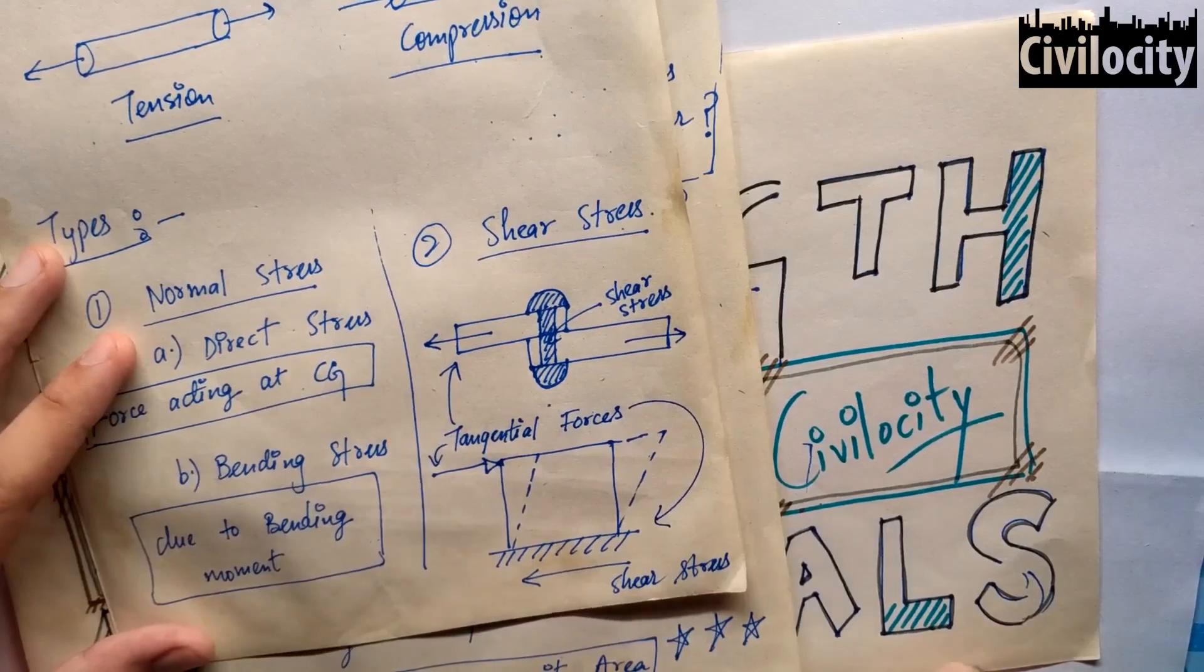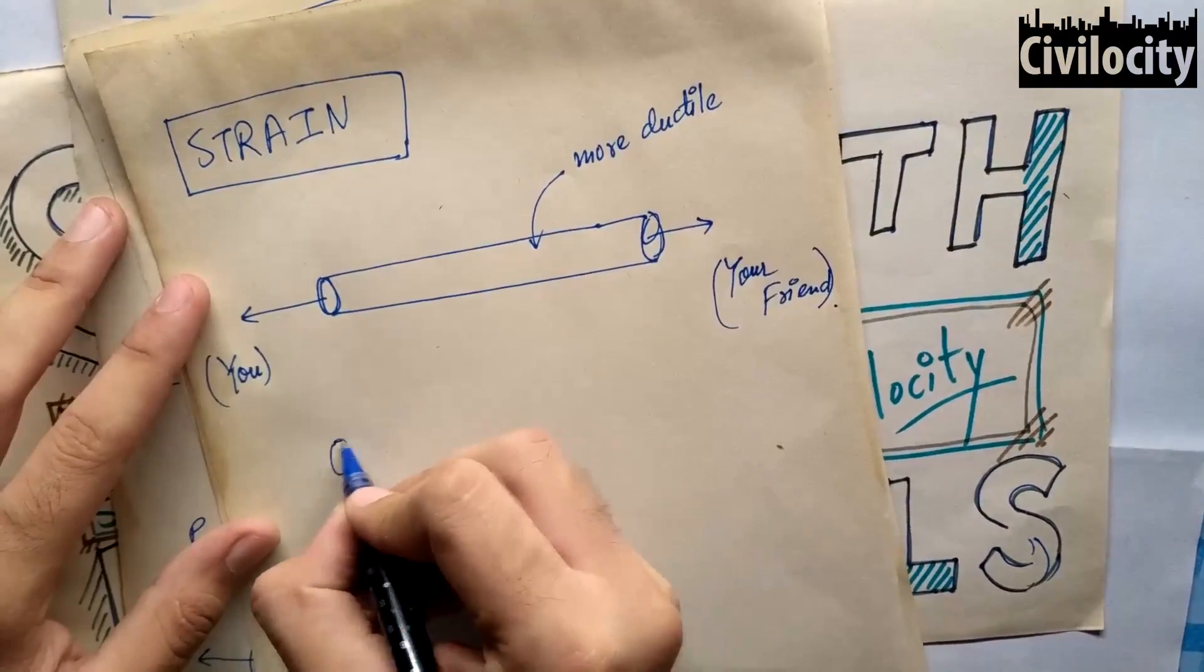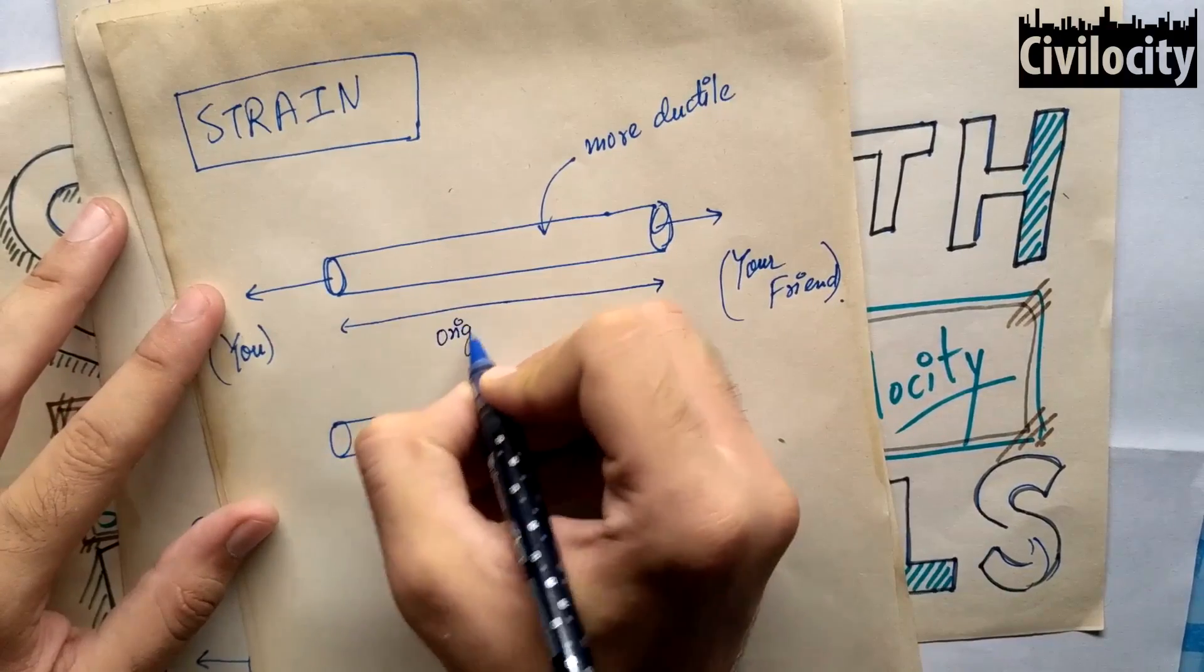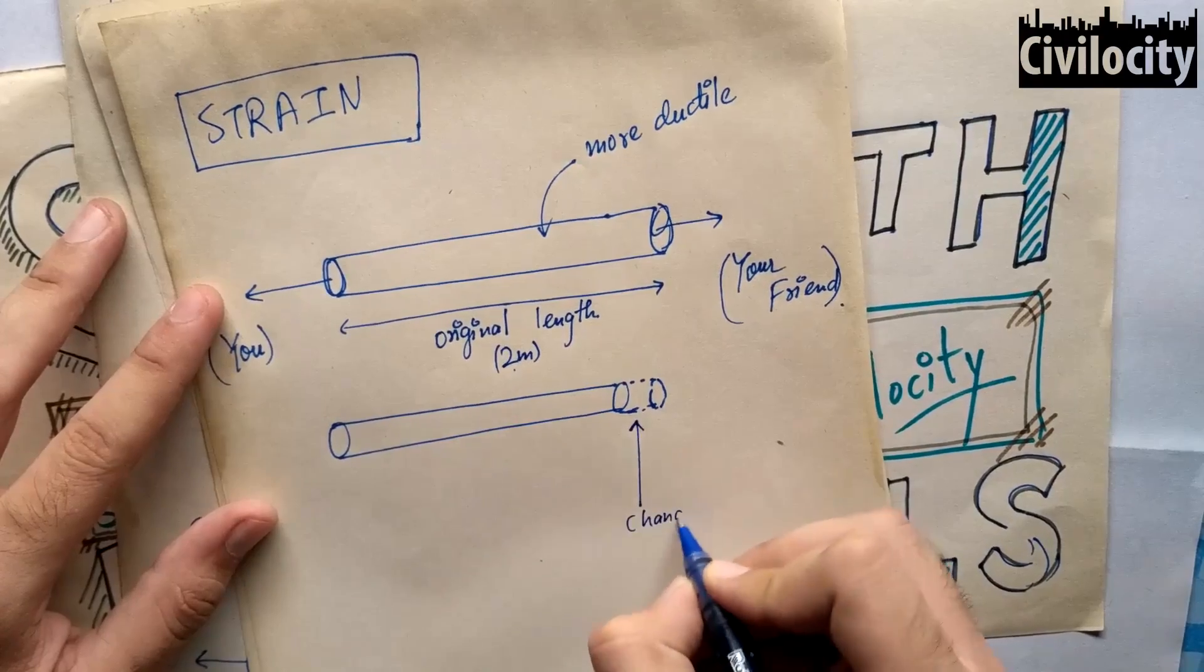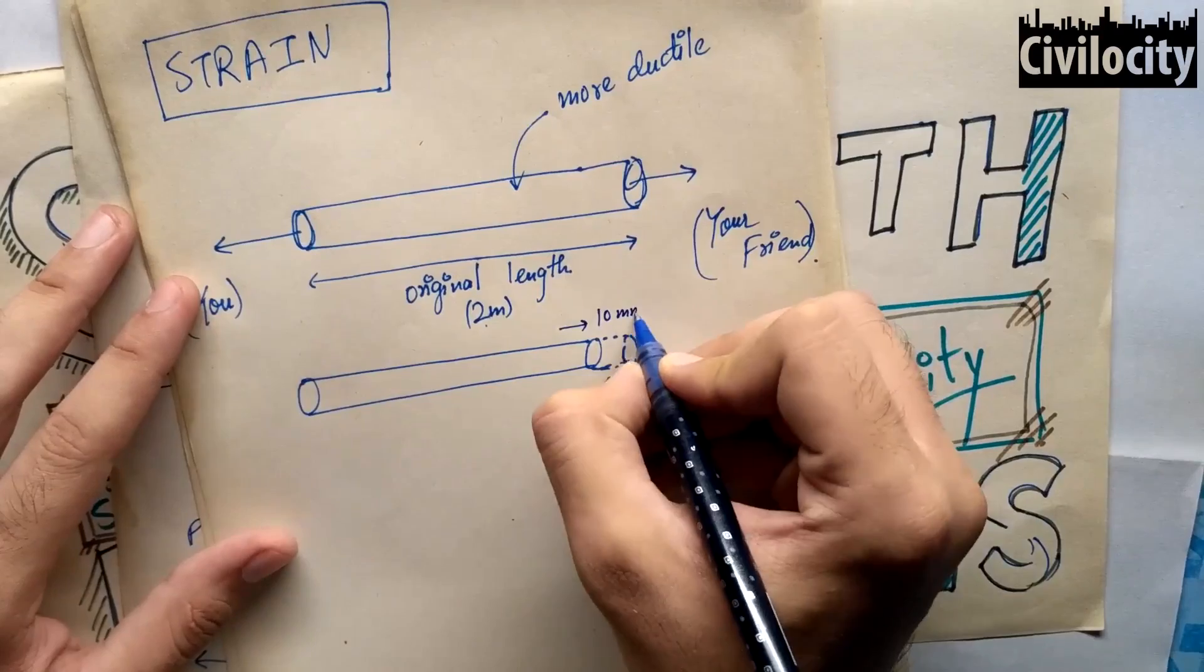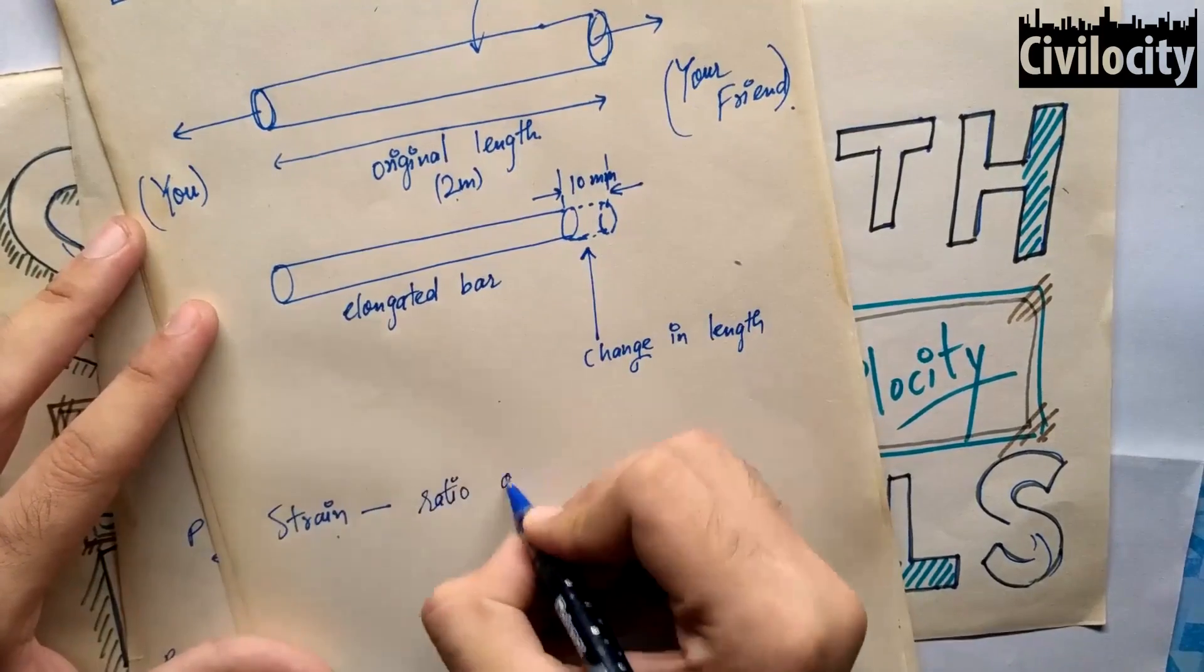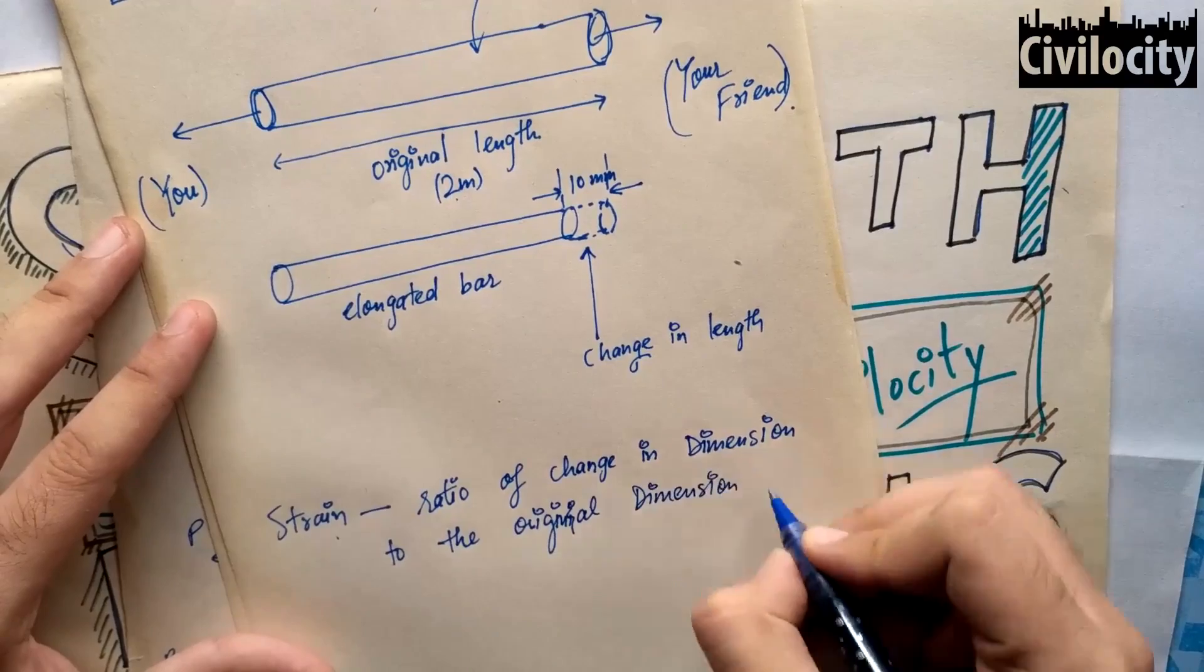After knowing about all these types of stresses, let's talk about strain. Let's assume that the bar which you and your friend were pulling was ductile in nature, and while you guys were stretching it, it got stretched up to 10 millimeters off of 2 meter length. Here comes the definition of strain.